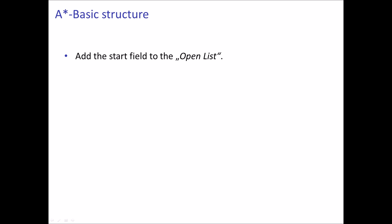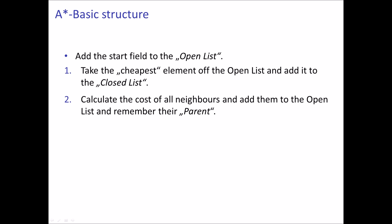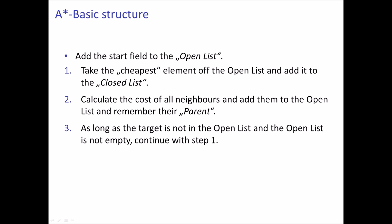The basic structure of the A* algorithm looks something like this. We start off by adding the start field to the open list. Then we take the cheapest element off of this open list and add it to the closed list. Then we calculate the cost of all neighbors of this field, add them to the open list, and remember their parent, which is basically just the current field. As long as the target is not on the open list and the open list is not empty, we continue — this is basically just a big loop.